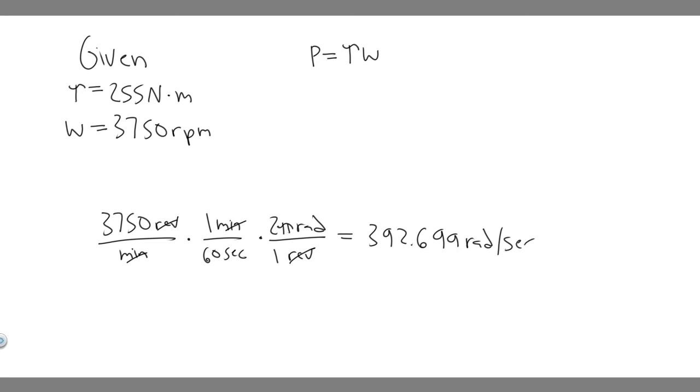And now we've got it like this, we can actually plug it in. Because now this is in newton meters, angular velocity is going to be in radians per second. So power will be equal to 255 multiplied by 392.699. So if you go ahead and do this, you're going to get 100,138.2658.